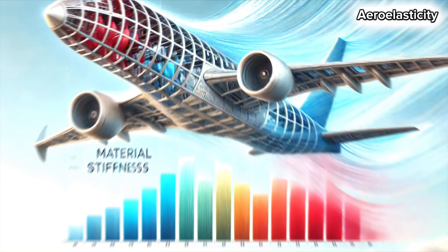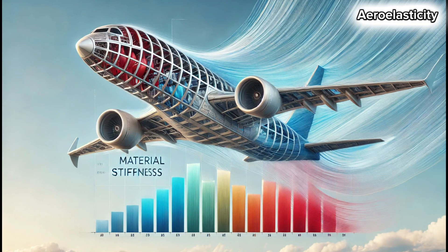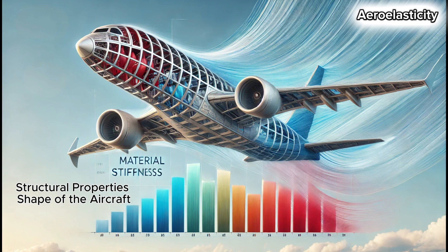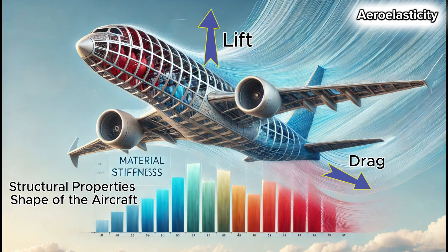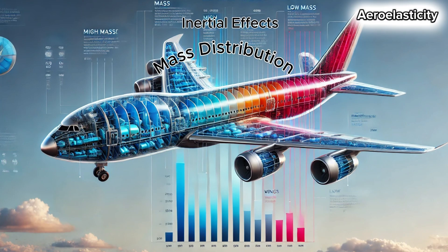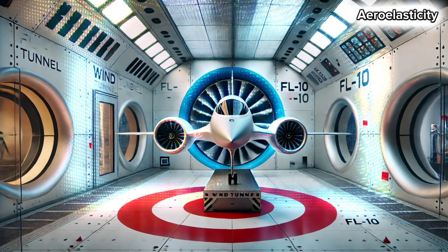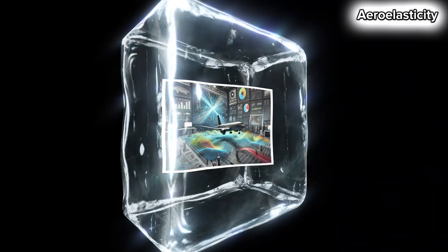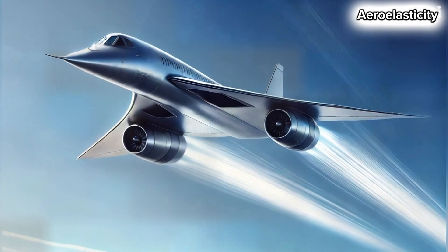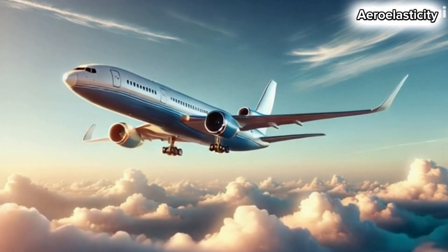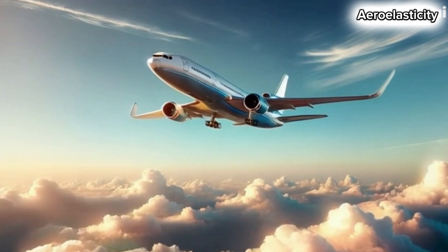Aeroelasticity is influenced by several factors. Structural properties like material stiffness and the shape of the aircraft play a significant role. Aerodynamic forces such as lift and drag also interact with these structures. Finally, inertial effects — how the mass is distributed — can tip the balance, leading to stable or unstable behavior. Designing for aeroelasticity involves rigorous testing, often in wind tunnels or through advanced computational simulations. Engineers apply these principles to fighter jets for agility, commercial aircraft for efficiency, and even wind turbines for sustainability.